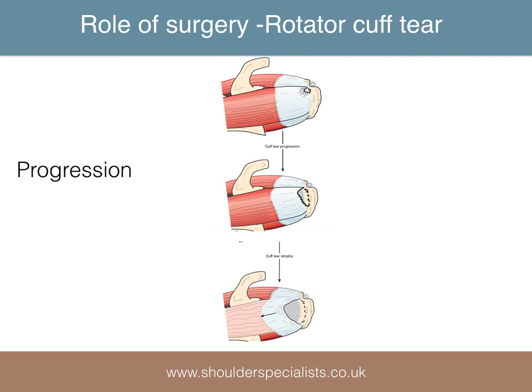Tears most commonly start at the anterior portion of the supraspinatus tendon and progress posteriorly. The theory as to why this occurs relates to the attachment to the bone, or the footprint. It is narrowest at the front of the tendon, and thus the traction forces may be more concentrated at this part.